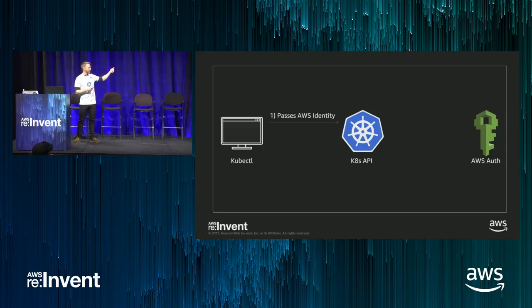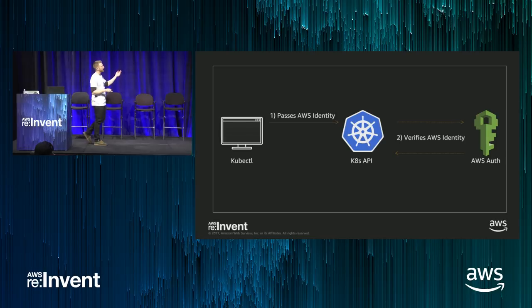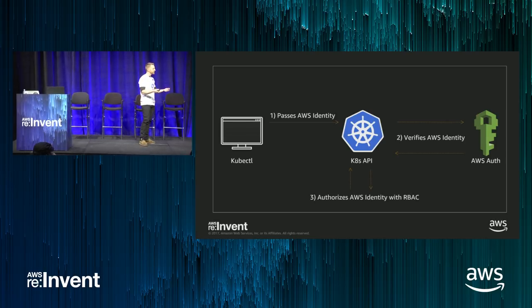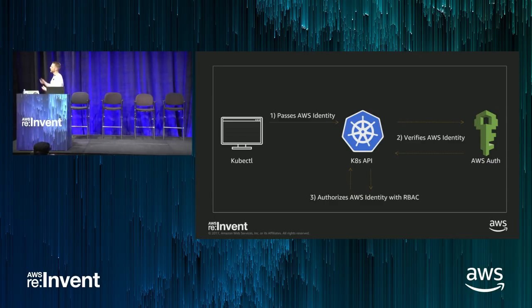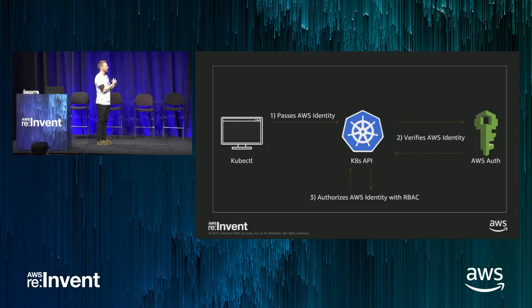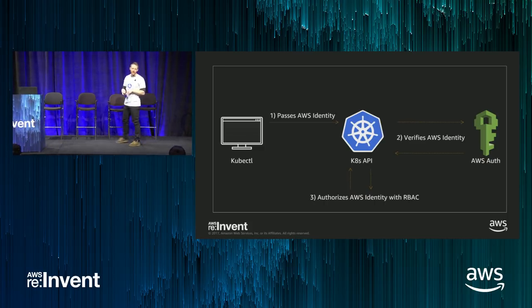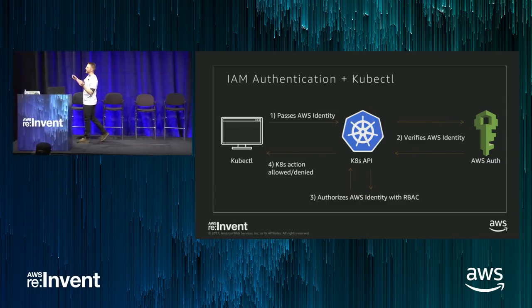The authenticator helps wrap your AWS identity with any kubectl call. When I make a get pods call, the authenticator looks for AWS credentials — whether in environment variables or the AWS config file — grabs them, wraps them up, and passes them with the AWS identity to the Kubernetes API server. On the EKS backend, we've implemented AWS authentication to verify if that AWS entity is indeed a valid AWS user. We're doing authentication only — yes or no, is this a valid identity in the account? Then we pass off actual permissions to RBAC inside Kubernetes — Role-Based Access Control — which specifies what actions you can take. So you get IAM for authentication on the front end and native Kubernetes RBAC for authorization inside Kubernetes.